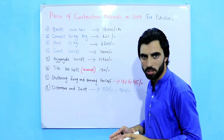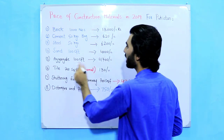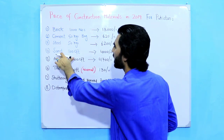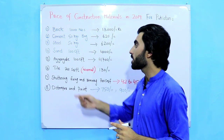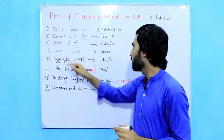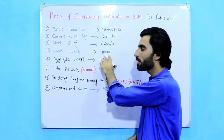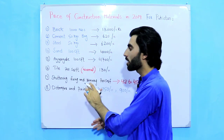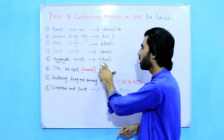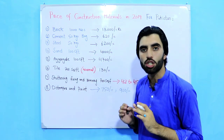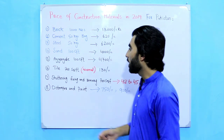For sand, one thousand safty price is 4,000 rupees. For aggregate or crush, one thousand safty is 4,700 rupees.